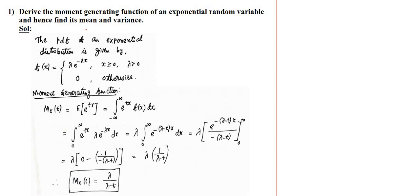Since it is a continuous case random variable, we are going to define the probability density function instead of the probability mass function. The PDF of exponential distribution is given by f(x) = λe^(−λx), where x ≥ 0 and λ > 0, and 0 otherwise.